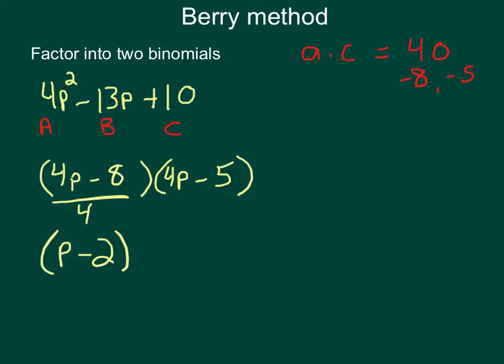Okay? Now, then I look at this one. Do they share a common factor? In this case, they do not. And so I'm just going to simply write that down. 4P minus 5. This is your answer.